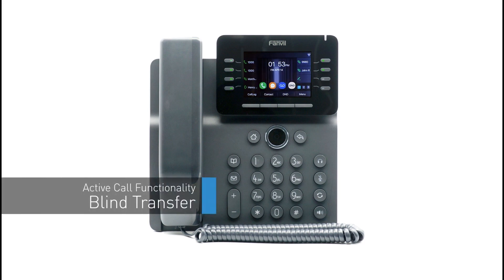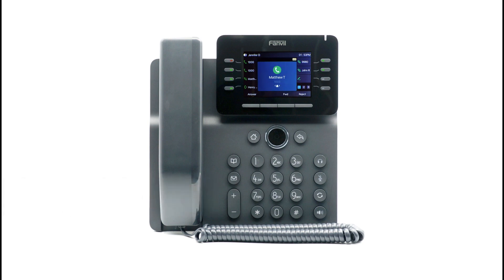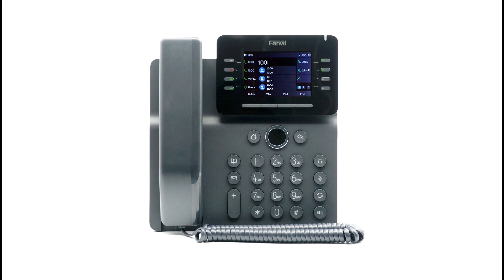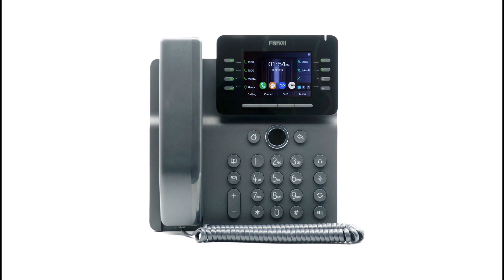A blind transfer allows you to immediately transfer a call to another number or extension. At the bottom of the screen, press the transfer soft key. Dial the number or extension you wish to transfer the call to, and press transfer again. The call will immediately start ringing to the second party.